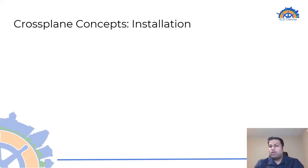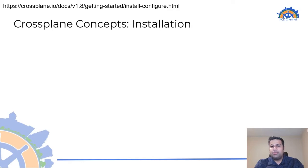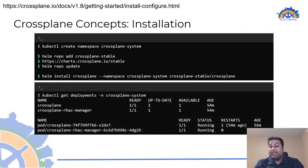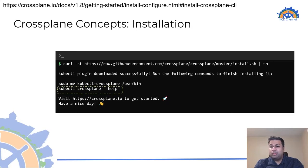Now let's see how Crossplane works and talk about some of its fundamental concepts. Crossplane can be installed on any Kubernetes cluster, typically using the official Helm chart in a new namespace called crossplane-system. Once installed, we can see the deployments and associated pods running in that namespace. We can also optionally install the Crossplane CLI tool that extends the native kubectl tool, enabling it to install, build, and push Crossplane providers and packages.